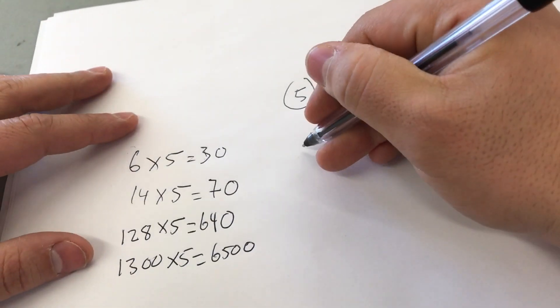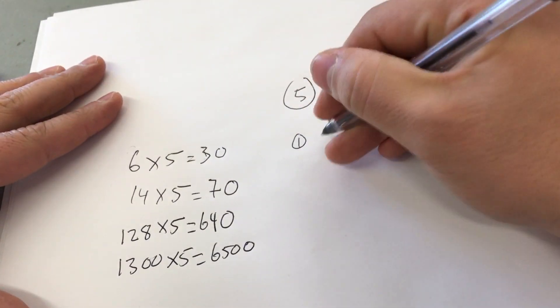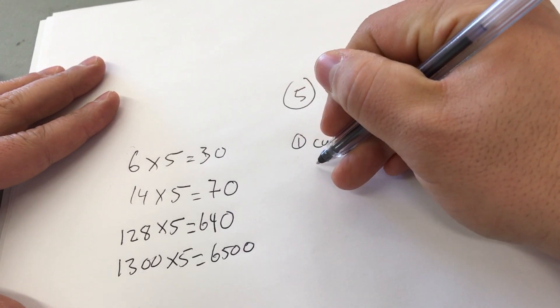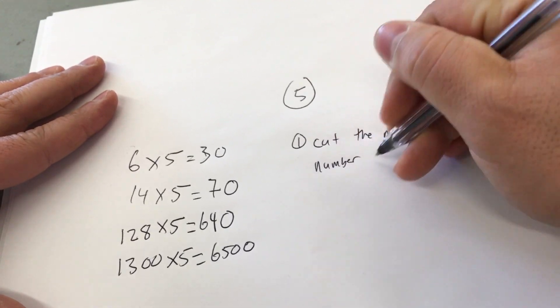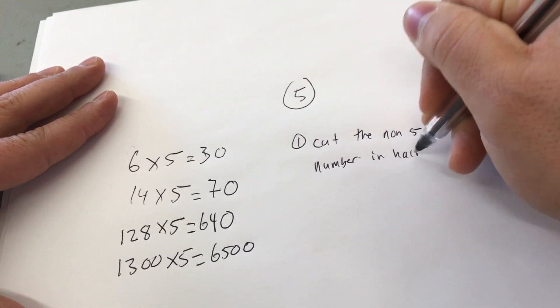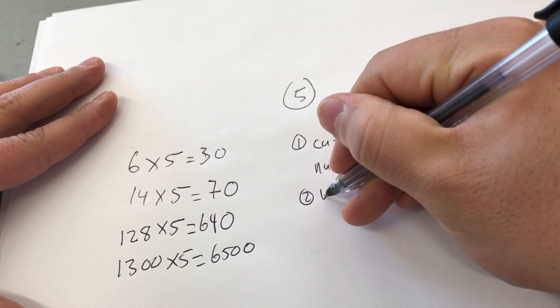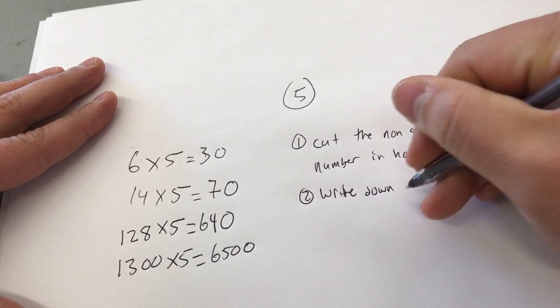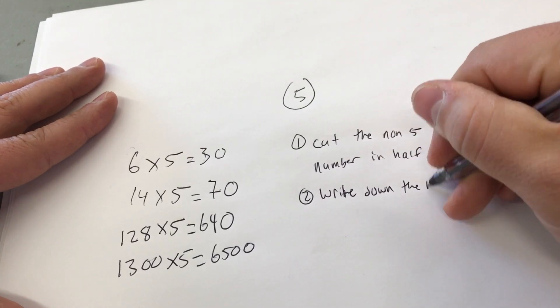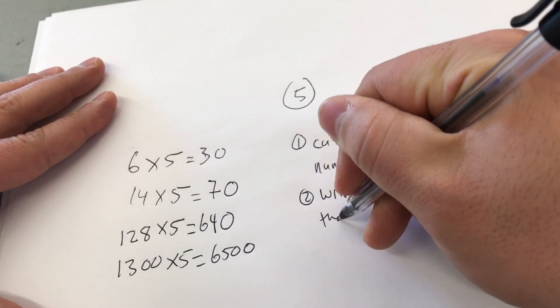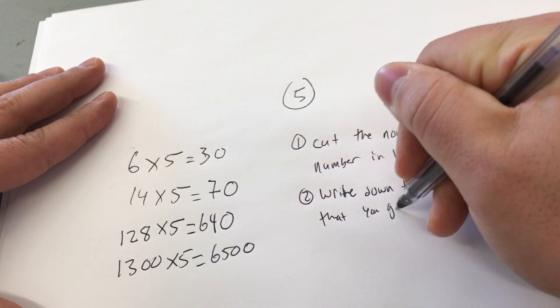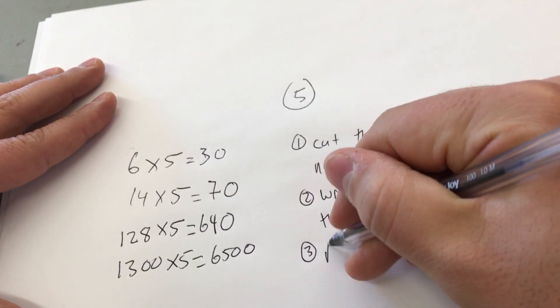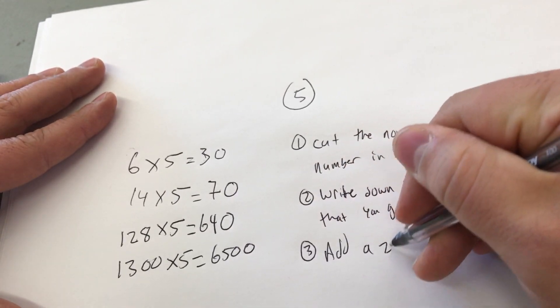So basically step one is you're going to cut the non-5 number in half. Step two is going to be to write down the number that you got. So it's the half number that you got. Step three is going to be to add a 0.